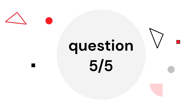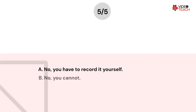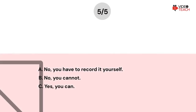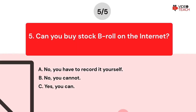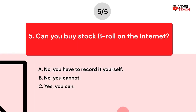Question number five: Can you buy stock B-Roll on the internet? Option A: No, you have to record it yourself. Option B: No, you cannot. Option C: Yes, you can. Now you have about 15 seconds to think about your answer.